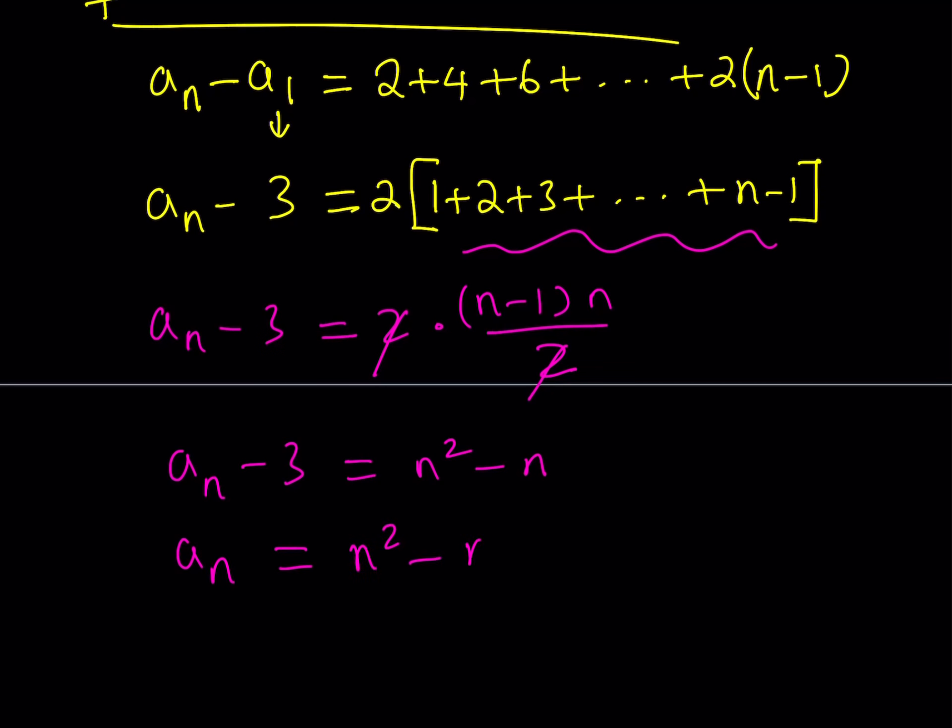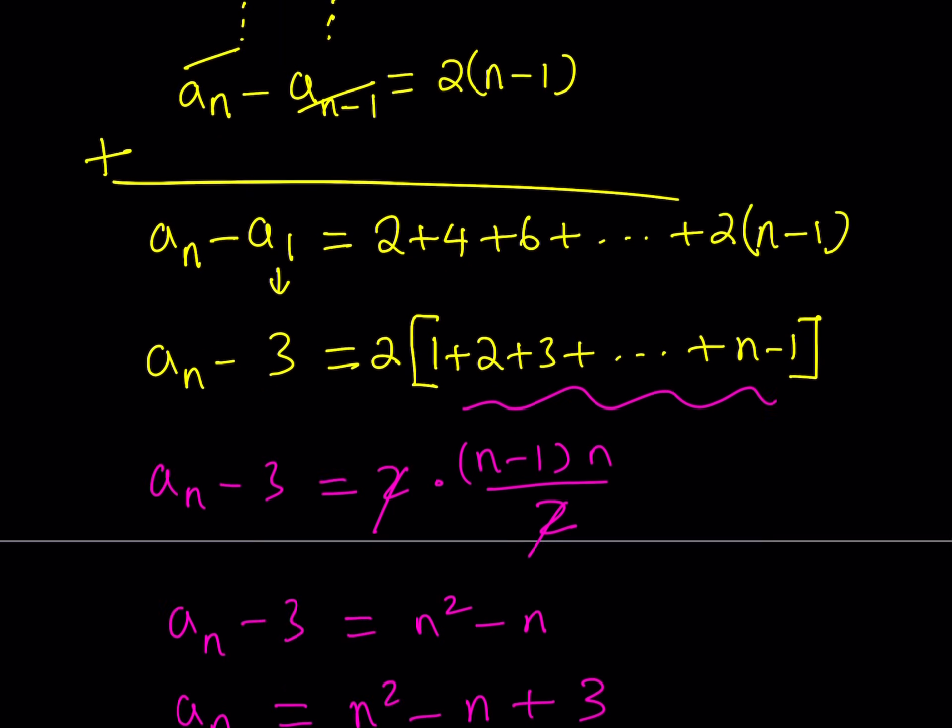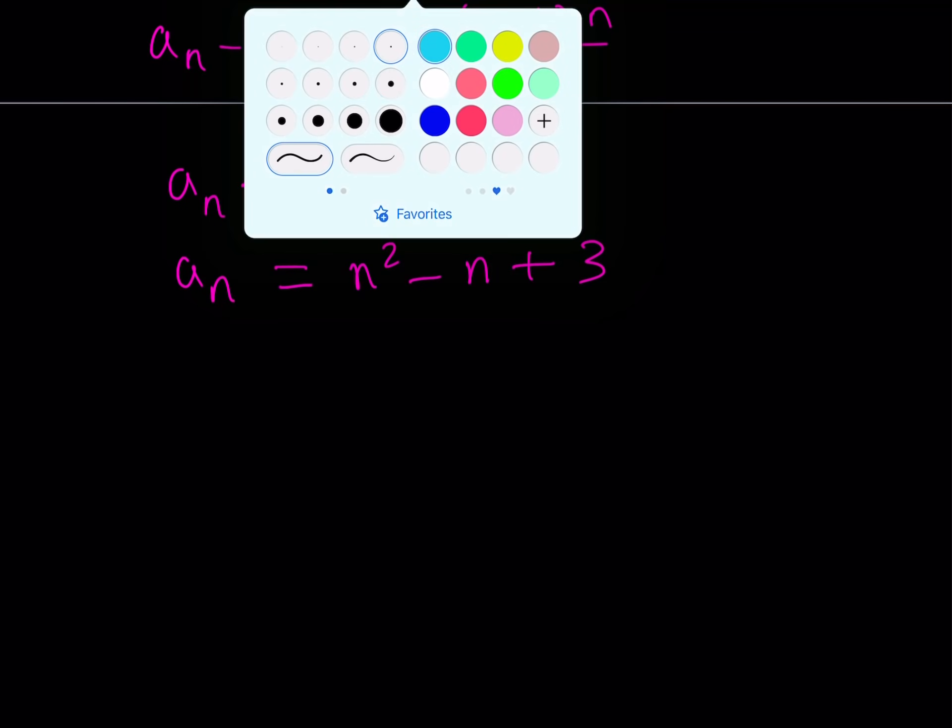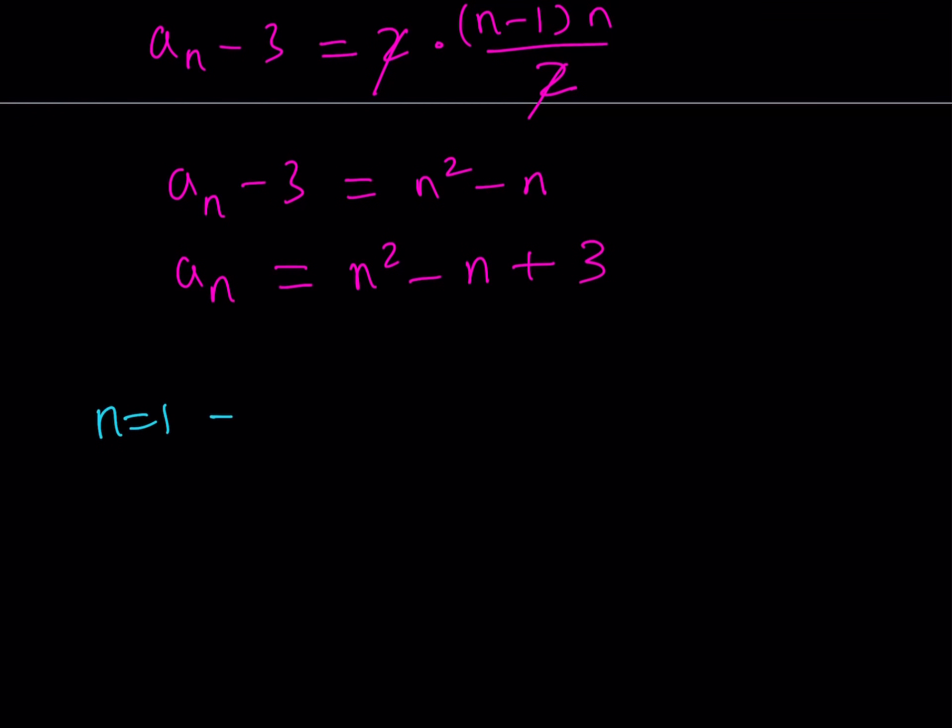Remember our goal was to get the nth term of this sequence and we did. Now we can just go ahead and just for fun test it out. For example, we can replace n with several different values. Let's go ahead and do that. For example, I can just go ahead and replace n with 1. That should give me a sub 1. Let's check it out. 1 squared minus 1 plus 3 and that is going to be 3. If you replace n with 2, you should get a sub 2 which is 2 squared minus 2 plus 3. And that will be a 5. And then if you replace n with 3, you should be getting a sub 3 which is 3 squared minus 3 plus 3. And obviously that's going to be 9.